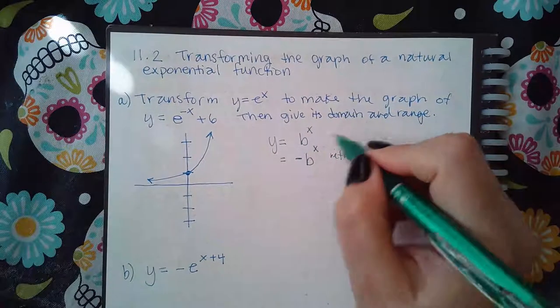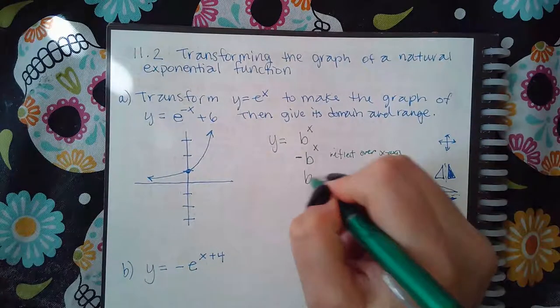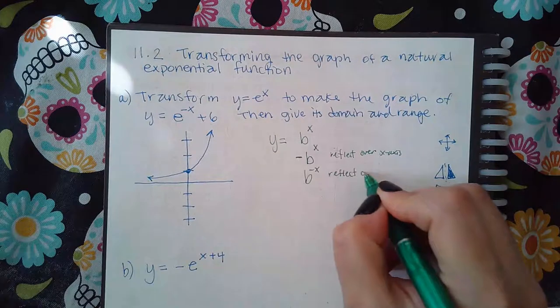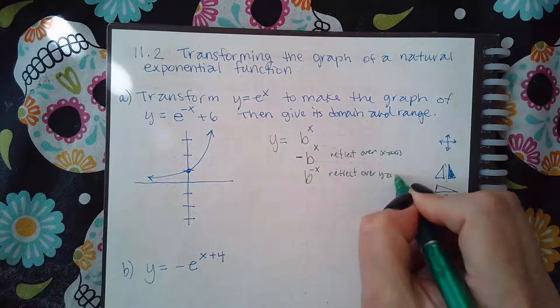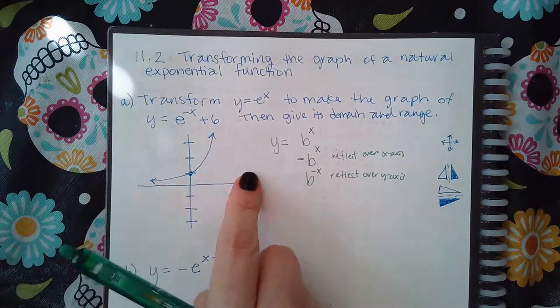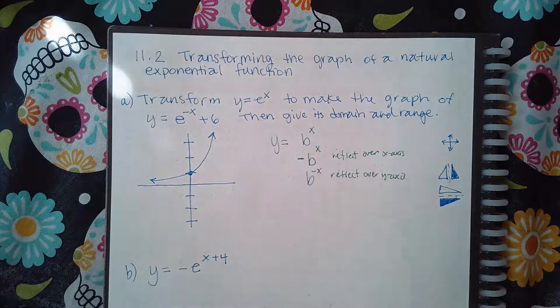If you put the negative here, it's gonna reflect over the y-axis, meaning this part's gonna come over here, that part's over there. Reflection over the x-axis means all of the top reflects downward toward the bottom.